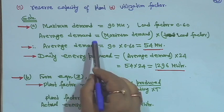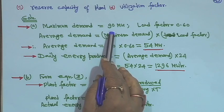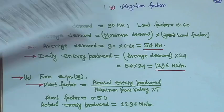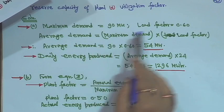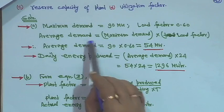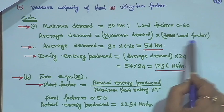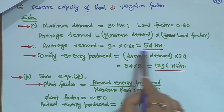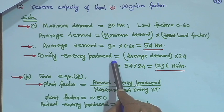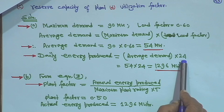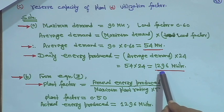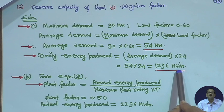Solution: maximum demand is 90 MW (given) and load factor is 0.6. Therefore, average demand = maximum demand × load factor = 90 × 0.6 = 54 MW. Daily energy produced = average demand × 24 hours = 54 × 24 = 1296 MWh.